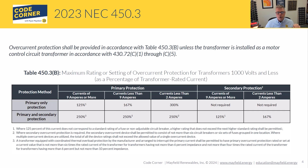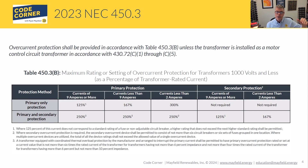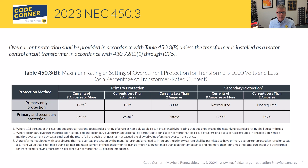When thinking about this, we're providing overcurrent protection for the transformer itself per this table, but we also have to protect the conductors connected to it. On the secondary side that's relatively straightforward — we size conductors based on the overcurrent protection just as we normally would. On the primary side, if we utilize the full 250% for the transformer overcurrent device, we need to make sure our conductors are sized large enough to be protected by whatever overcurrent device we install.